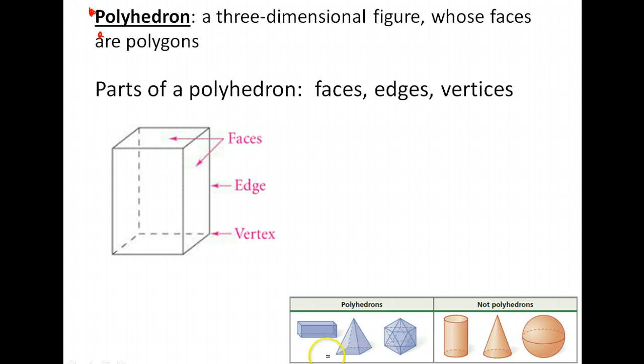Down here we have some examples and non-examples. Examples of polyhedrons: here we have a prism, a rectangular prism, a pyramid, and then we have a hedron of some type. Notice with all of these, all of the faces are flat figures or polygons. These on this side are not polyhedrons. Notice they have some type of a curved surface. They're not flat everywhere.